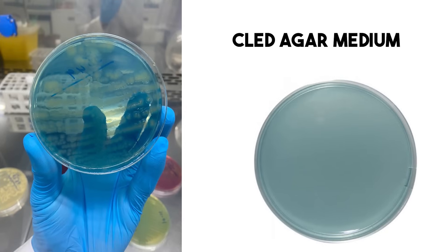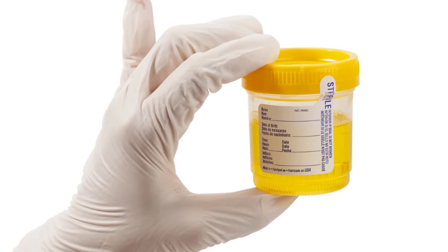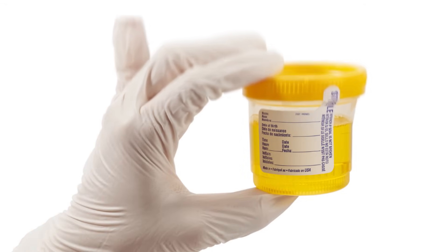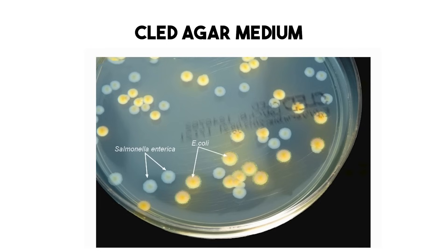CLED agar — Cysteine Lactose Electrolyte Deficient — as District Laboratory Practice points out, is commonly used for urine cultures. It lets most urinary pathogens grow and differentiates based on lactose fermentation. Lactose fermenters turn yellow; non-fermenters are usually blue or green because of the indicator used in CLED. It gives a quick idea of what might be causing a urinary tract infection.